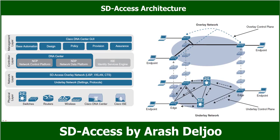The next layer is the network layer, which consists of the underlay network and the overlay network. These two sub-layers work together to deliver data packets to and from network devices participating in SD Access. The network underlay is the underlying physical layer whose purpose is to transport data packets between network devices for the SD Access fabric overlay.